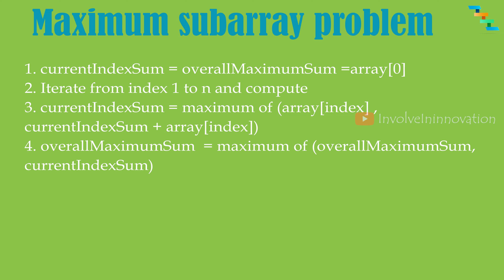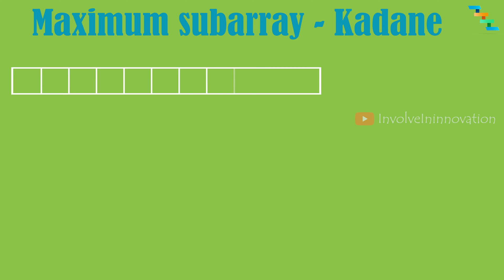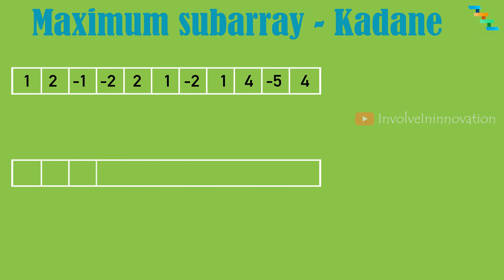Now let's dive deep into this algorithm with an example. Assign the 0th index value to the current index max value and the overall maximum sum. This is obvious because there is no element present before this index, so the maximum sum at index position 0 is the value present at the index itself.